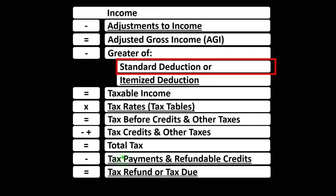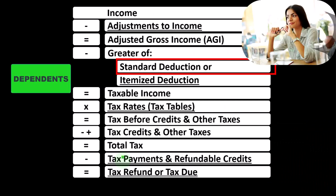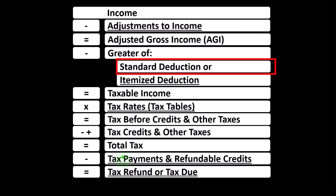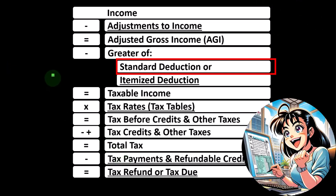We're now isolating and thinking about dependents. Whenever we think about a change in one particular item with regards to taxes, we want to visualize the primary line items that might be impacted for the income tax equation, and then think about what those changes to those line items will do as it ripples through the rest of the income tax formula.